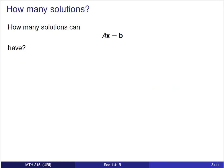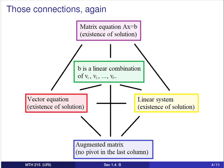Our question is: how many solutions can Ax equals b have? We have a matrix vector equation, and if we are trying to solve for the vectors x that make the equation true, how many possibilities could there be? We've been talking about connections between these questions. We know that if you have a linear system of equations, there can be either no solution, one solution, or infinitely many solutions. So we would expect that there should be either zero, one, or infinitely many solutions to the matrix equation Ax equals b.